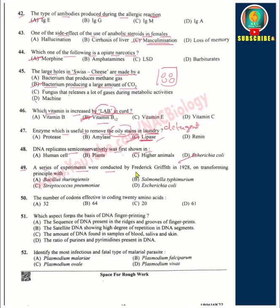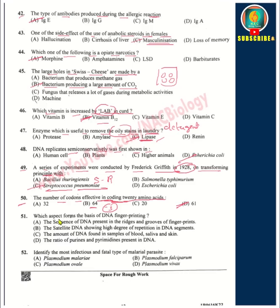Question 49: A series of experiments was conducted by Frederick Griffith in 1928 on the transforming principle using the bacteria Streptococcus pneumoniae. Question 50: The number of codons effective in coding 20 amino acids — out of 64 codons, 3 are nonsense codons, so the correct answer is 61. Question 51: The basis of DNA fingerprinting is option B — satellite DNA showing a high degree of repetition in DNA segments.